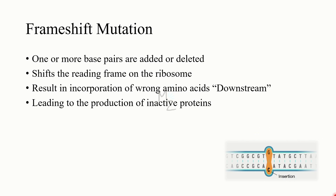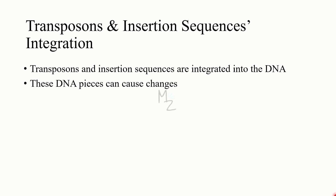The second type of mutation is frameshift mutation. This occurs when one or more base pairs are added or deleted, which shifts the reading frame on the ribosomes and results in incorporation of the wrong amino acids. The ribosome was supposed to read a certain sequence, but an extra base pair — like guanine and cytosine — disrupts the reading frame and results in production of inactive proteins. The third type occurs when transposons or insertion sequences integrate into the DNA, causing profound changes in the genes they insert into and in adjacent genes.